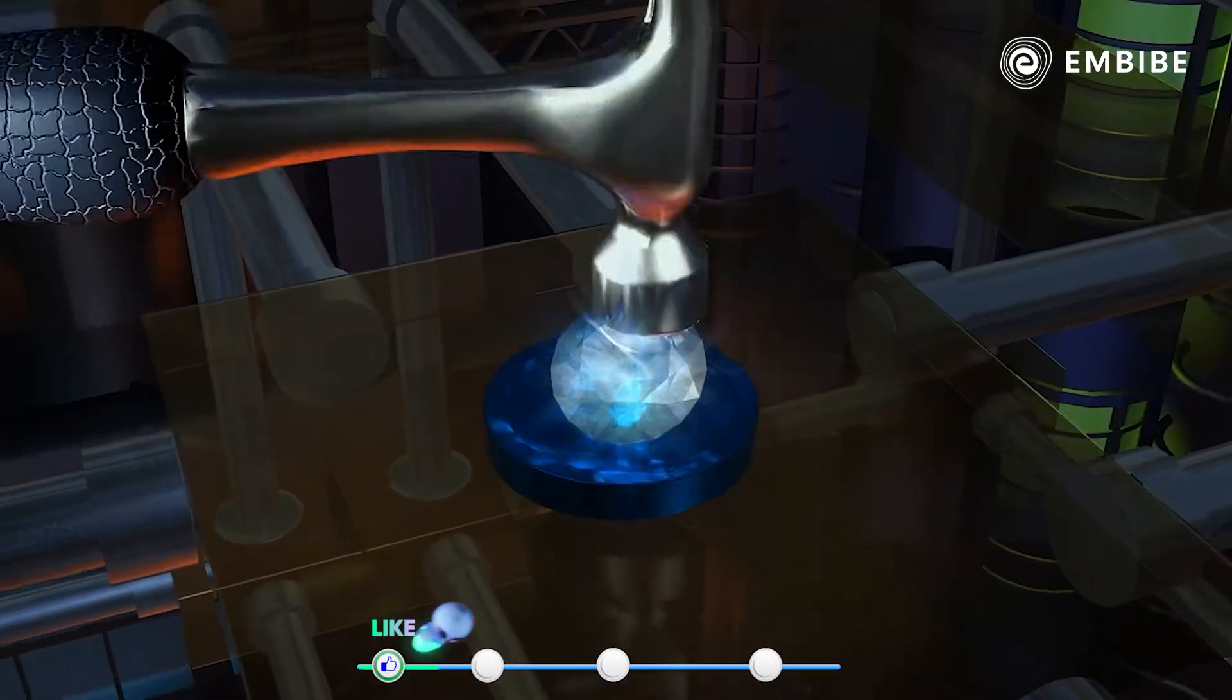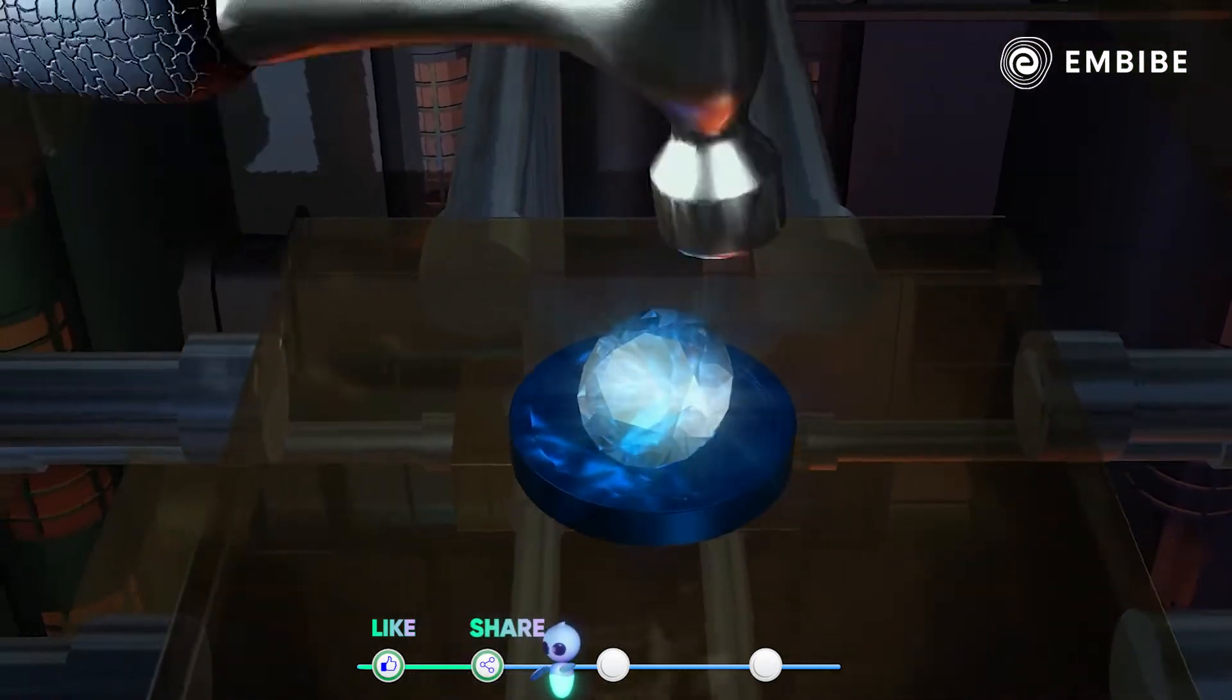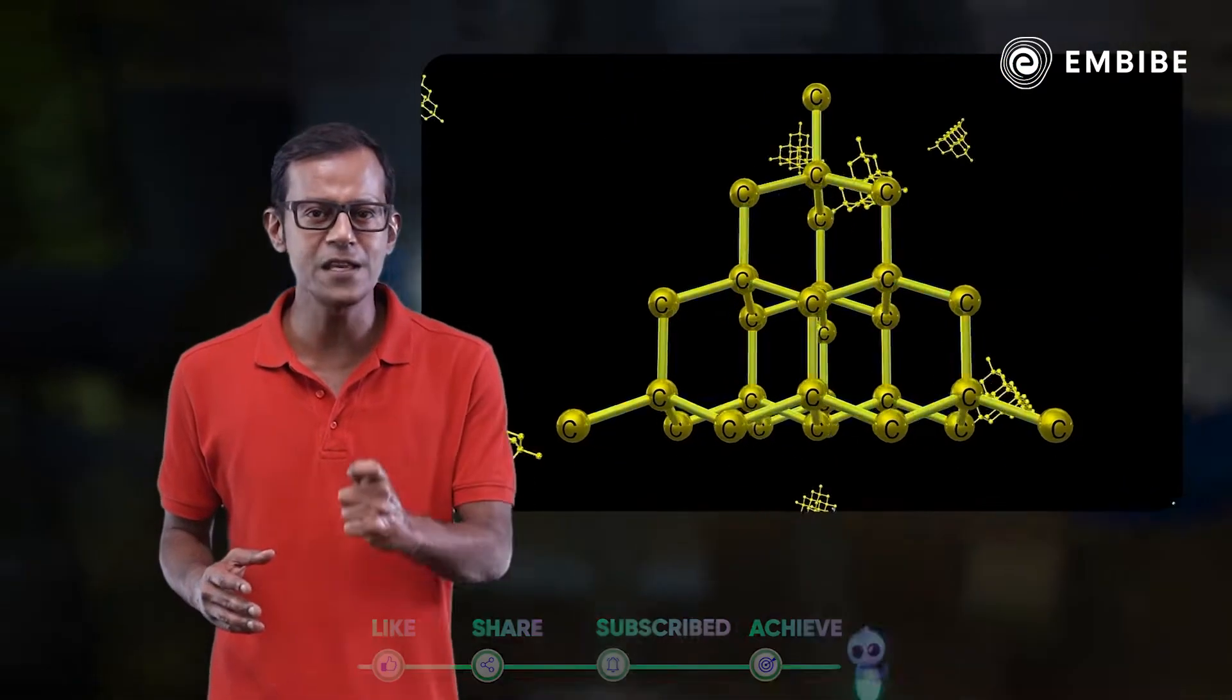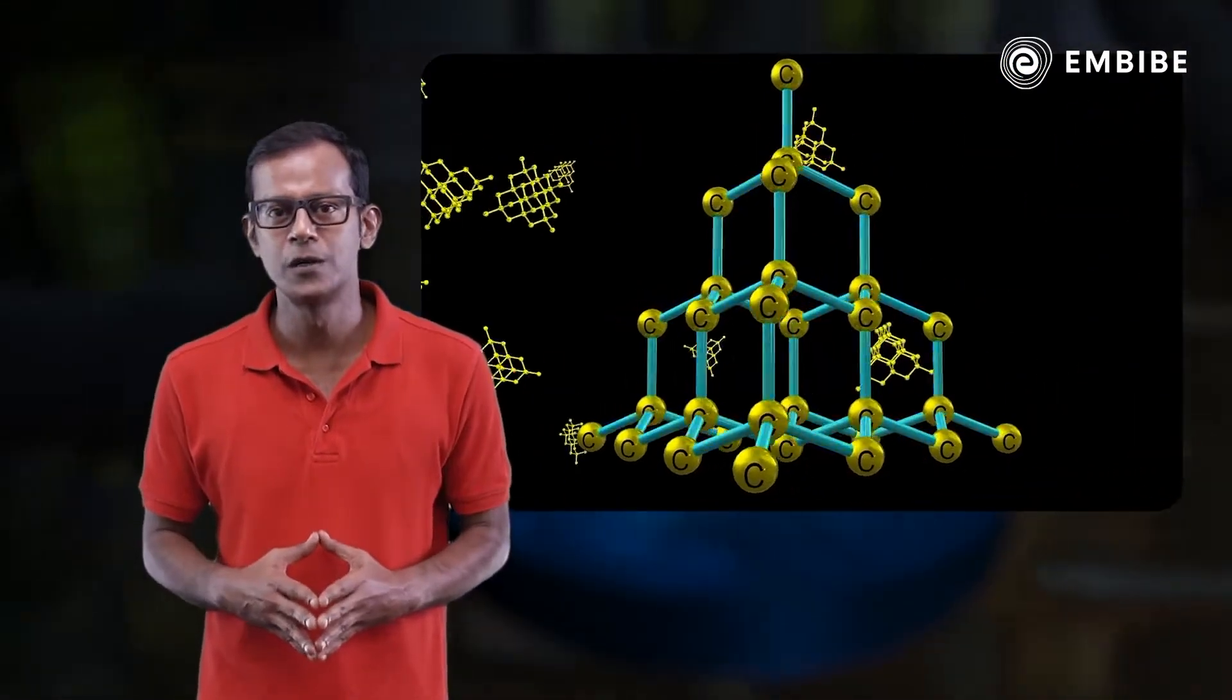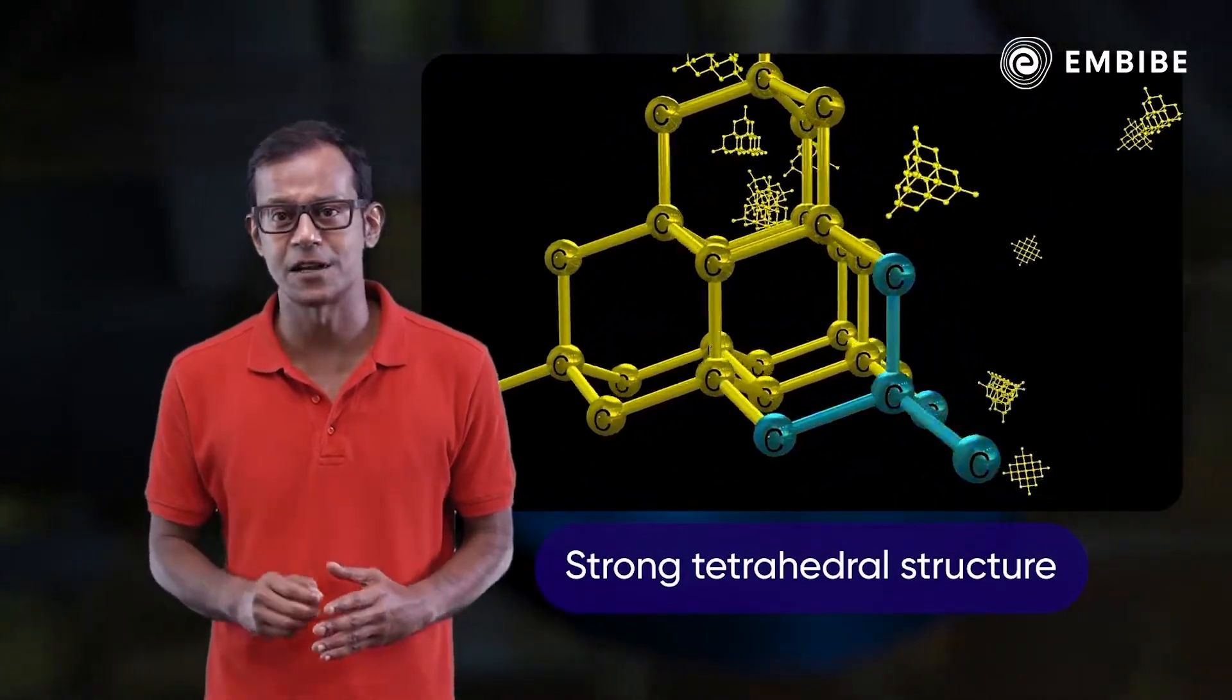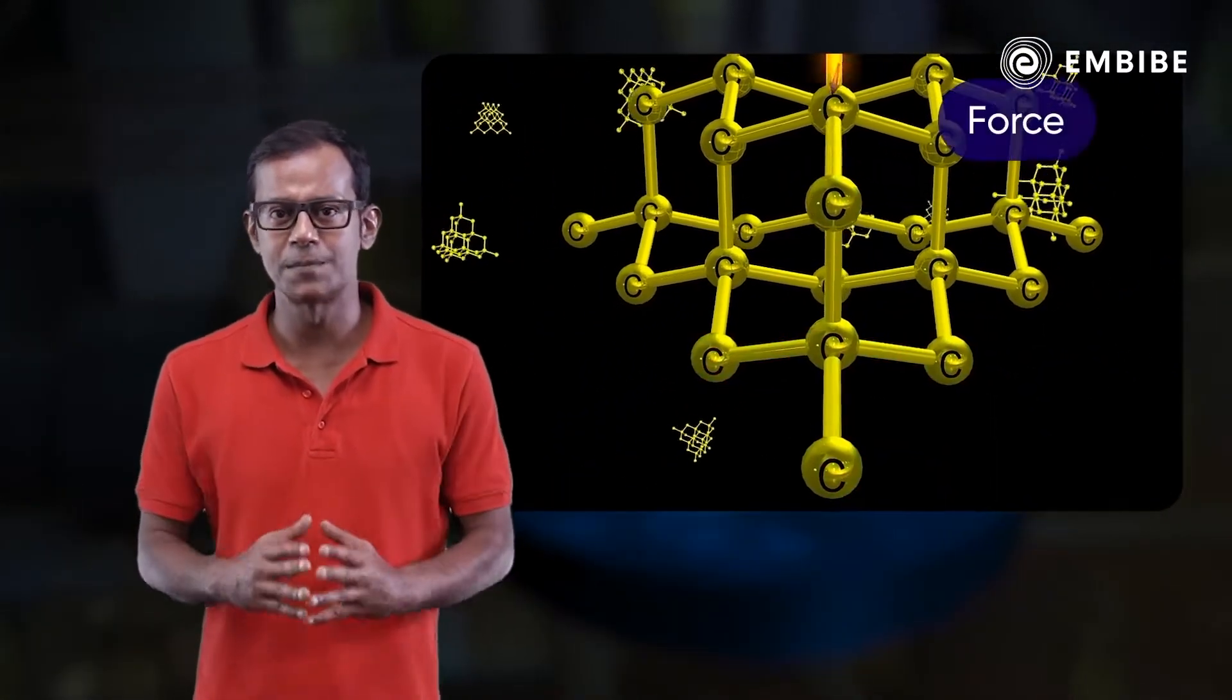When a force is applied on a diamond, it does not break. In diamond, carbon atoms are bonded by very strong covalent bonds to each other to form a strong tetrahedral structure.